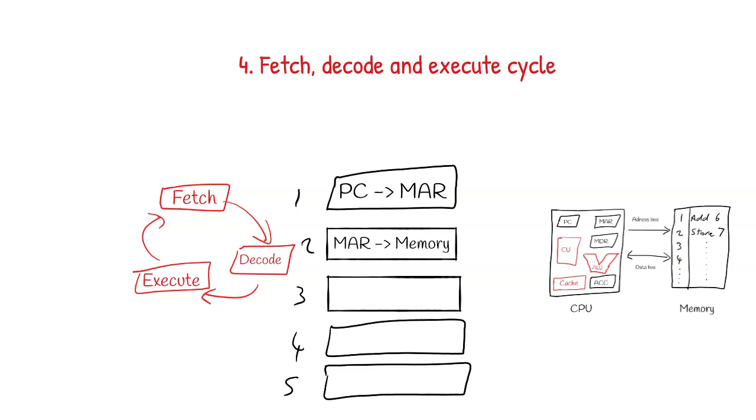The address in the memory address register is then put onto the address bus to be sent to the memory. The instructions and data stored at the memory address seen on the address bus are then copied onto the data bus to be sent to the memory data register.